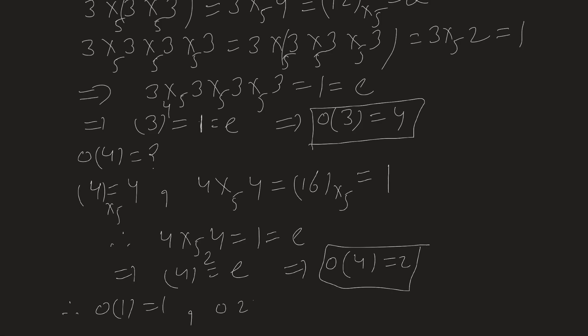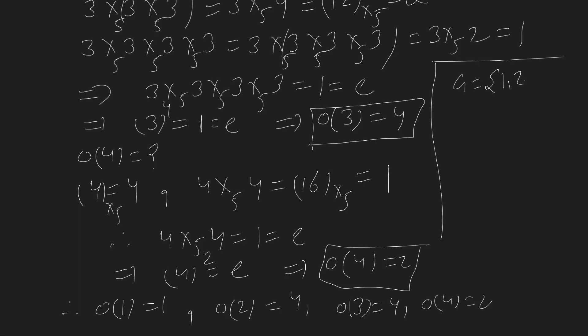So to summarize: order of 1 is 1, order of 2 is 4, order of 3 is 4, and order of 4 is 2. This is a very important question from the examination point of view. This is all I have from this lecture. If you liked the lecture, please like, subscribe, share, and comment. This is Dr. Ajesh saying goodbye — take care, bye.